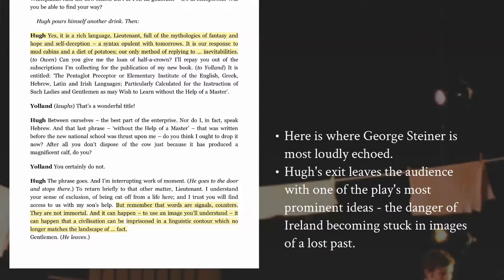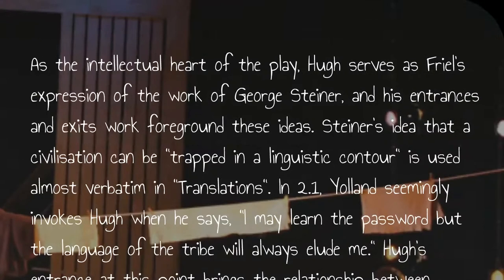I want to draw attention to where Hugh leaves the scene. As he exits, he invokes the work of George Steiner, the literary critic who wrote extensively about the role of language in shaping identity. Hugh says: 'Words are signals, counters, they are not immortal. And it can happen — to use an image you'll understand — it can happen that a civilization can be imprisoned in a linguistic contour which no longer matches the landscape of fact.' This is almost verbatim from George Steiner. Hugh's exit therefore leaves the audience with one of the play's most prominent ideas: the danger of Ireland becoming stuck in images of a lost past.